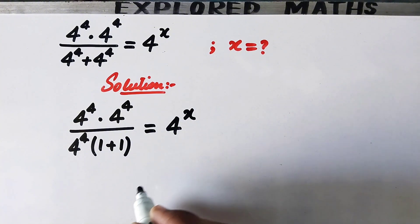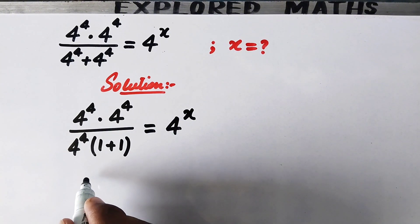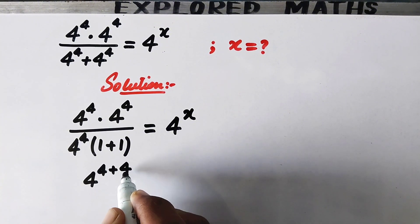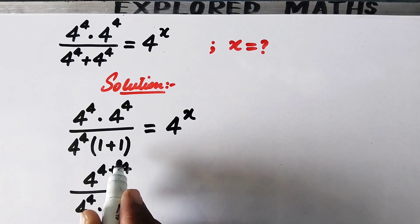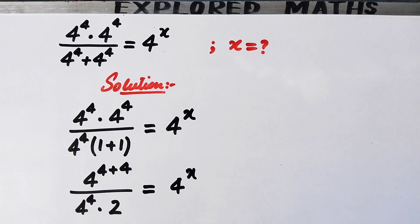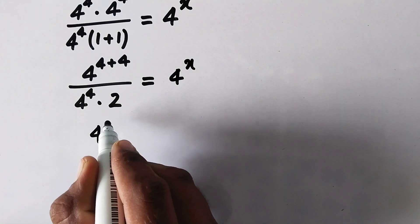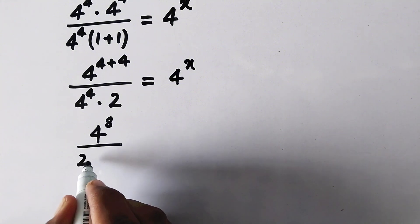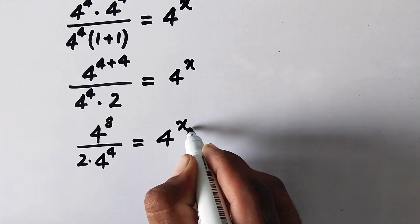Since the bases are the same, we can add the powers. So here we have 4 to the power (4 plus 4) divided by 4 to the power 4, times (1 plus 1) equals 2, which equals 4 to the power x. Now 4 to the power (4 plus 4) is 4 to the power 8, divided by 2 times 4 to the power 4, equal to 4 to the power x.